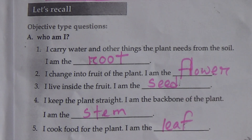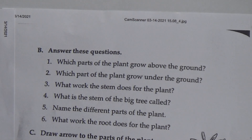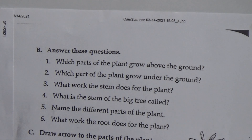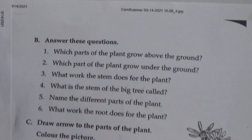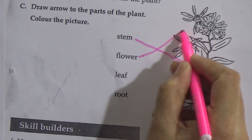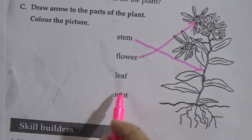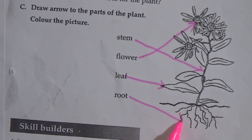Now, draw arrows to the parts of the plant and color the picture. Which one is stem? This one is stem — draw an arrow to the stem. Which one is flower? This one is flower. This one is leaf, and this one is root.